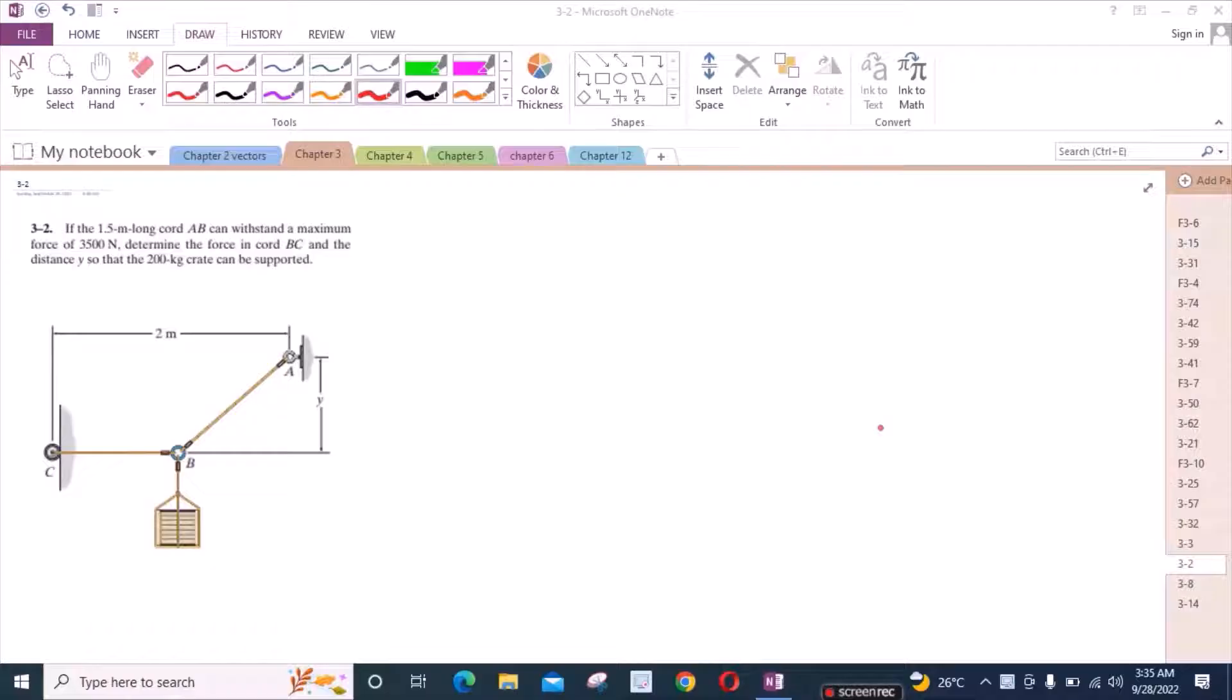So to solve this problem, first of all, we have to draw a free body diagram of point B. So if we consider point B, then we have some forces. Let's say this is our point B. Then we have one force which is acting downwards, the weight of this crate.